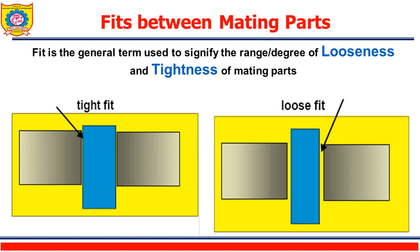Fits between mating parts. What is Fits? Fits is the general term used to signify the range or degree of the looseness and tightness of mating parts. We know that in case of mass production, a number of components are manufactured regularly and these components need to be assembled on the shop floor. So the relation which exists between these mating components is nothing but the Fits. When two parts are to be assembled, the relationship resulting from the difference between their sizes before assembly is called as Fits. It is the degree of tightness or looseness between the two mating parts to perform a particular function. The selection of Fits is made from the standard tables.